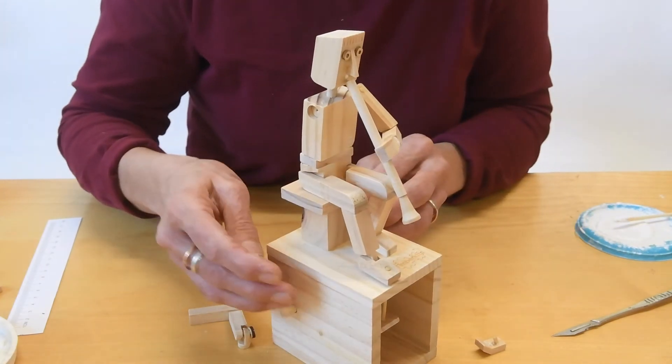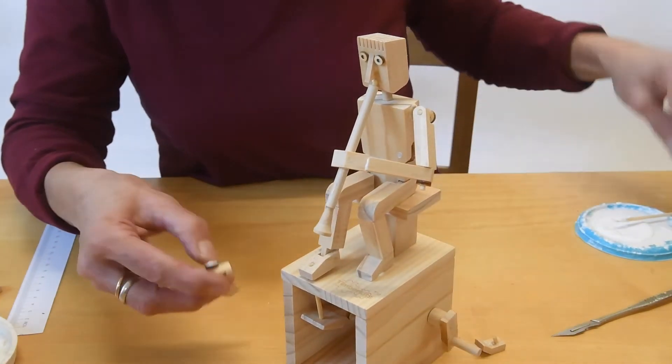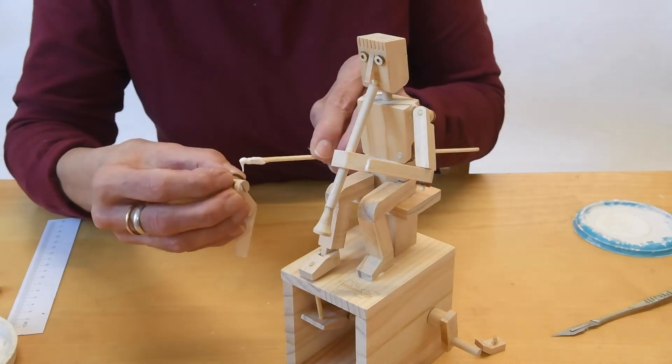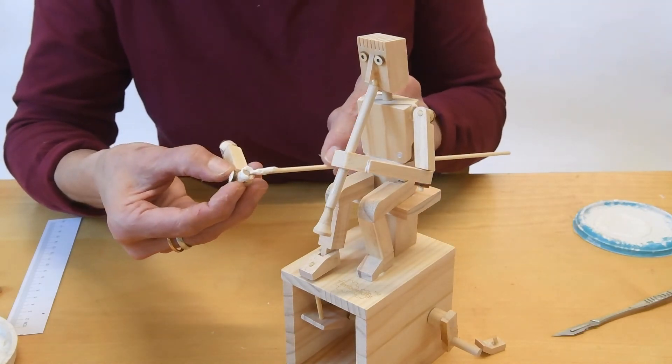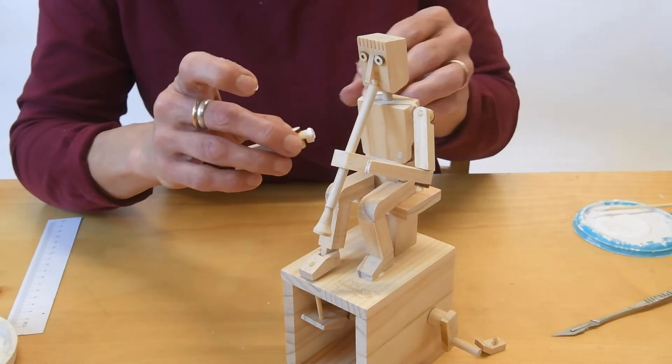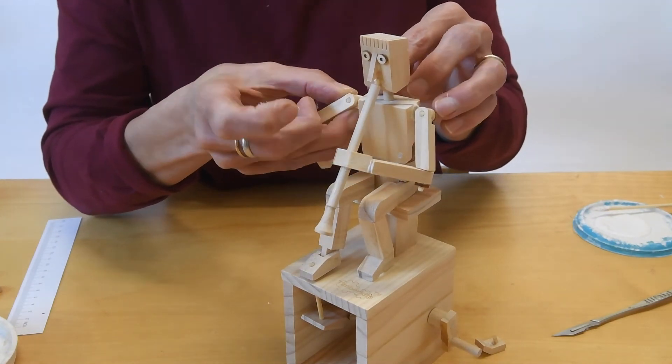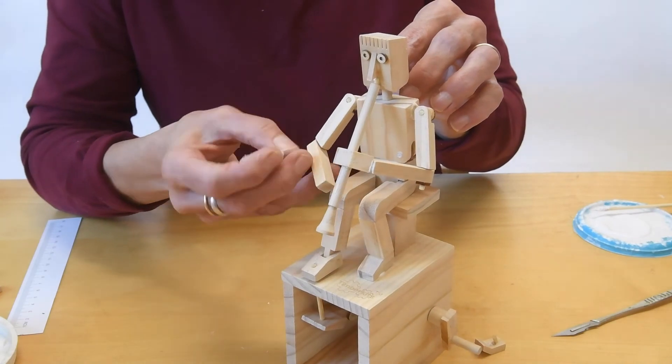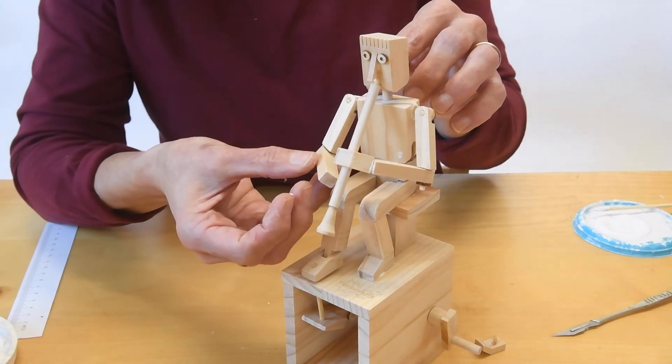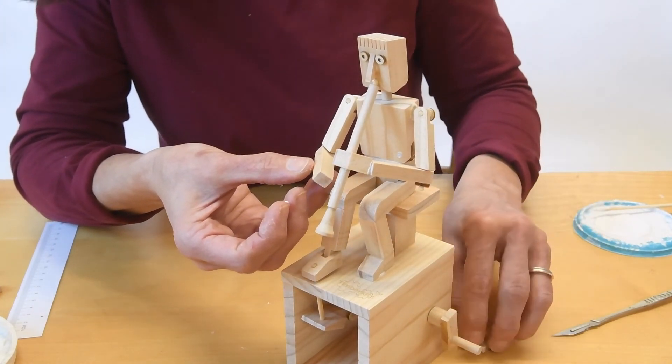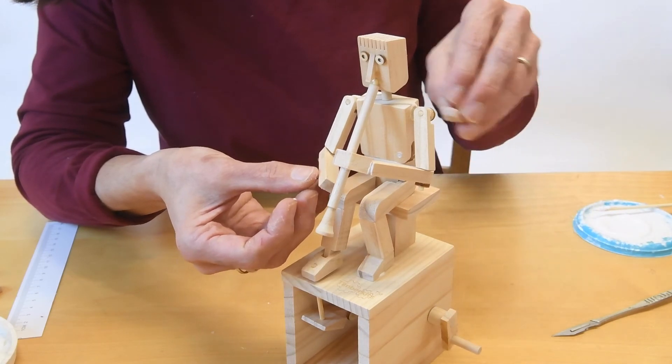And then tackle the other arm. So this is quite a fiddly job, so just go slowly and gently. So that's the second arm and we'll have that one down a little bit lower, about there. So I think that's going to be okay.